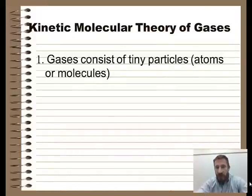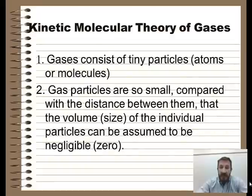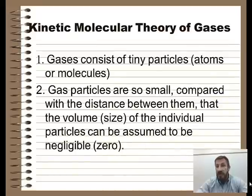The first tenant is gases consist of tiny particles, and those particles are either atoms or molecules. The second thing is that gas particles themselves are so small compared with the distance between them that the volume or size of the individual gas particles is assumed to be zero.